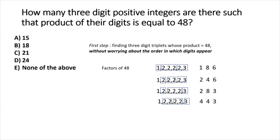The second step is finding how many permutations we can generate for each triplet, then adding them all up to get the total count. For {1, 8, 6}, we have three unique digits permuted all at once: that's 3P3 = 3! = 6. The same applies to {2, 4, 6} and {2, 8, 3}, each giving 6 permutations.